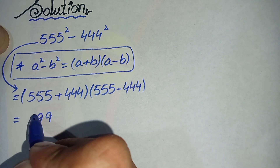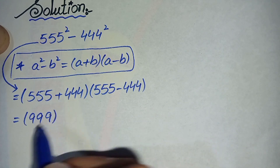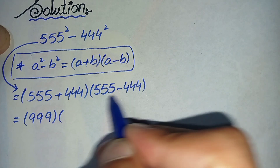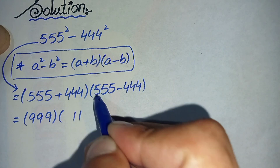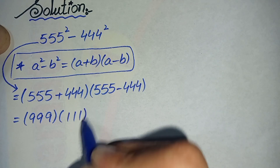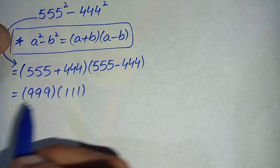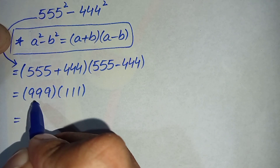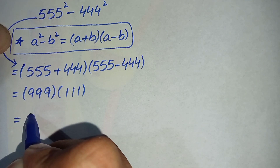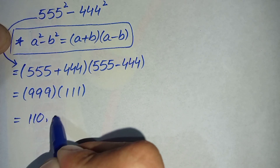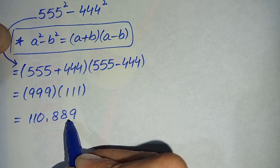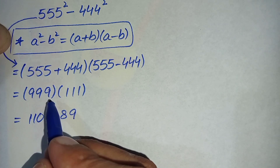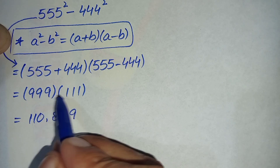Let's simplify these two expressions. 5 plus 4 is 9, 5 plus 4 is 9, and 5 plus 4 is 9 — adding these gives 999. Now subtracting: 5 minus 4 is 1, 5 minus 4 is 1, and 5 minus 4 is 1, giving 111. So by multiplying 999 by 111, it gives 110,889.